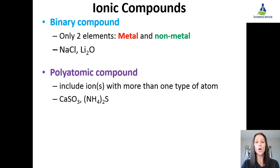The other type are polyatomic compounds. Poly meaning multiples. Polyatomic compounds include an ion with more than one type of atom in them, such as calcium sulfate or ammonium sulfide.